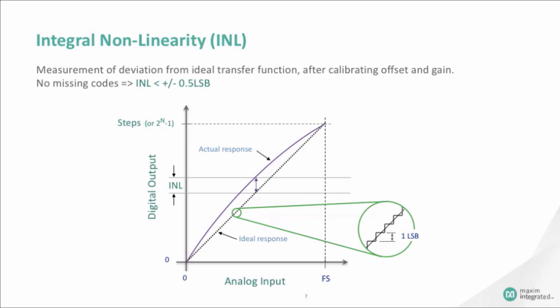The best-fit straight line INL provides information about offset and gain error, as well as the position of the transfer function. It determines, in the form of a straight line, the closest approximation to the ADC's actual transfer function.